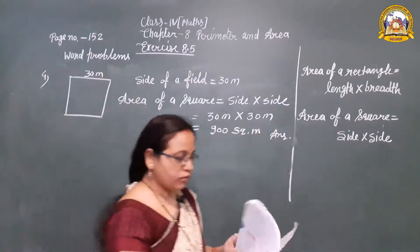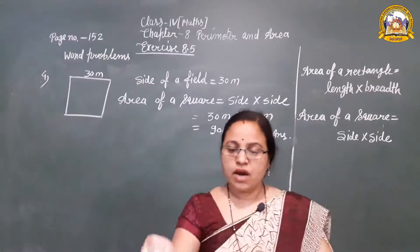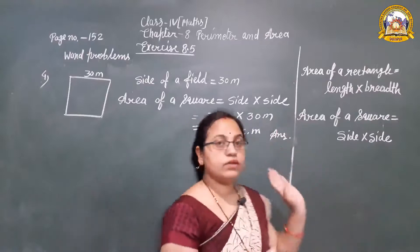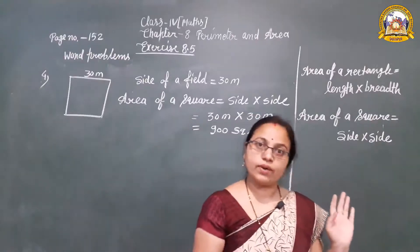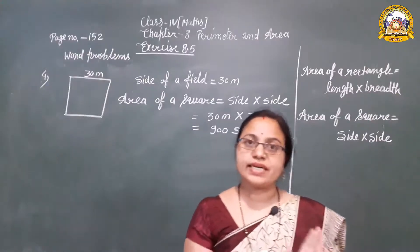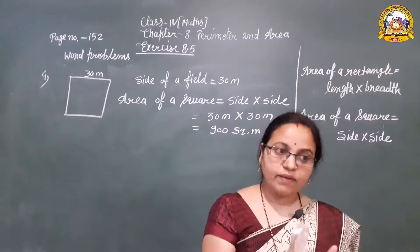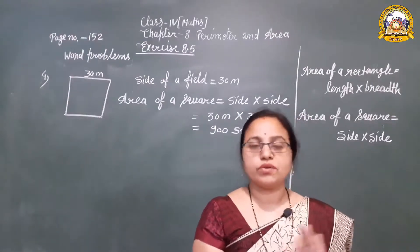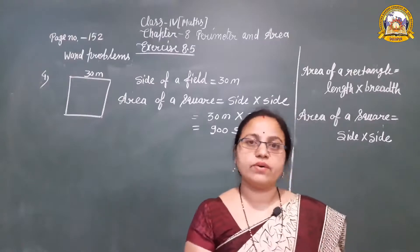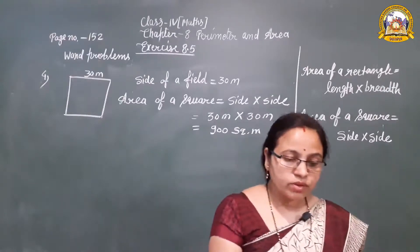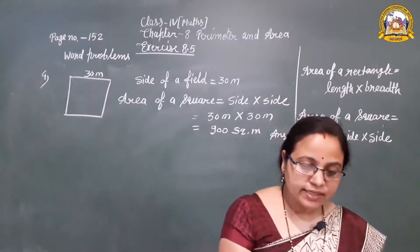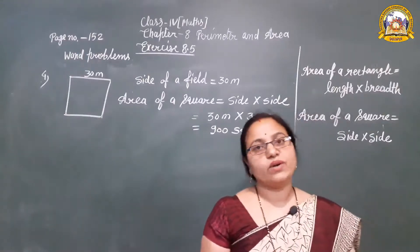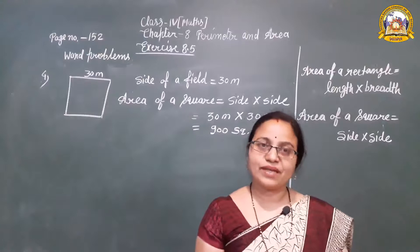So, have you understood how to solve this type of question — how we can find the area of a rectangle or square using the formula? We just need to identify whether the shape is a rectangle or a square, apply the formula accordingly, and find the area. Please solve this exercise in your rough copy and complete the classwork copy. Thank you.